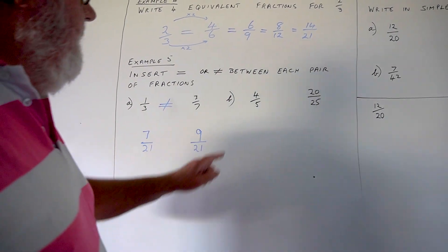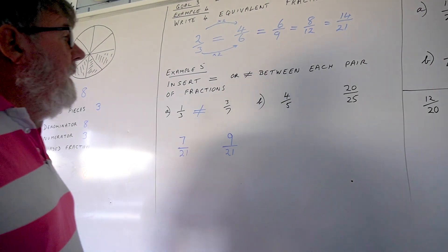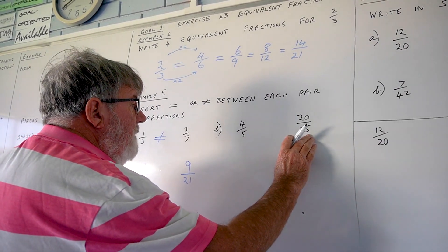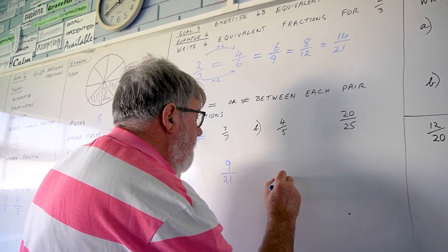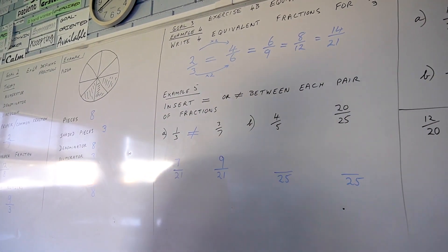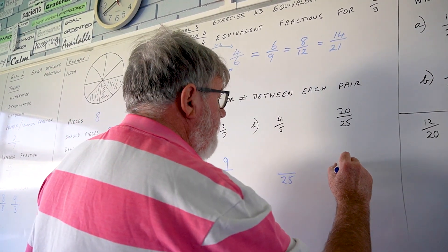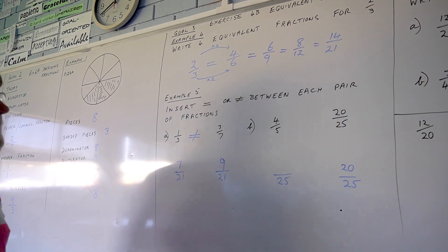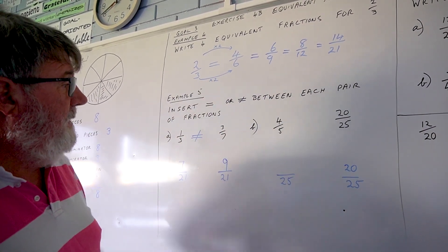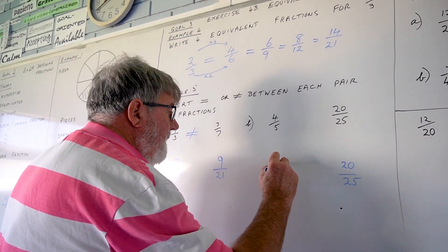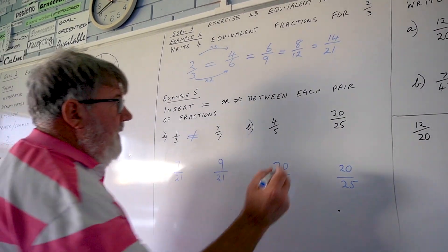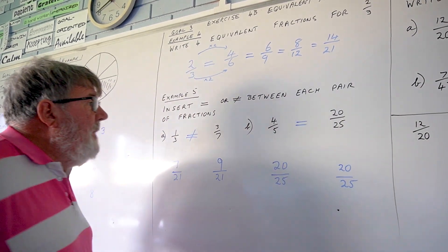Moving on to 4 fifths and 20 over 25. So, the lowest common multiple of 5 and 25. 5 is in fact a factor of 25. So, we can actually change both of those now to 25ths. The lowest common multiple of 5 and 25 is 25. Which is great because we don't need to change the first one. That just stays as 20 over 25. But what about this one here? 5 times what? What's the missing number? Answer, 5. So, what do I do to the 4? I multiply by 5. Now, look at what's happened here. You have 20 over 25. 20 over 25. They are in fact the same. So, 4 fifths is the same as 20 over 25.